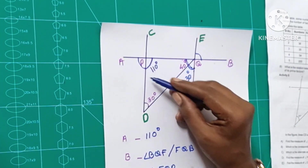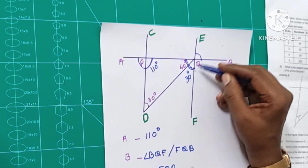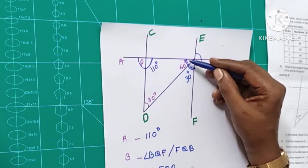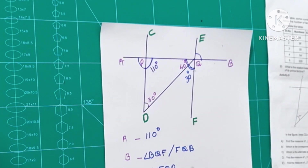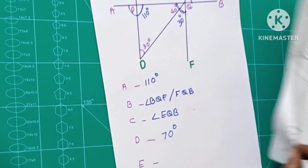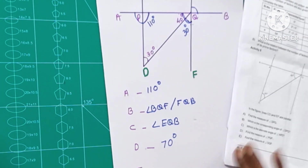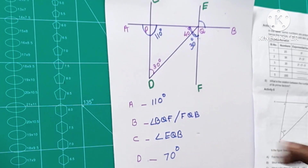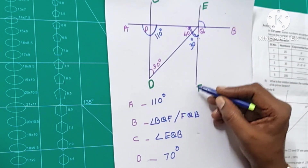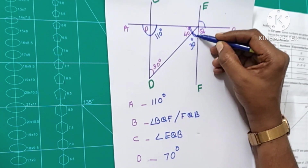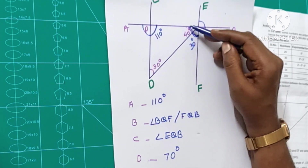Now, let's take a look at the third part. This is the third part. Find the measure of angle DQF. Where do you call DQF? DQF is the third part. In the first part, if we do this, it will be 150 degrees.